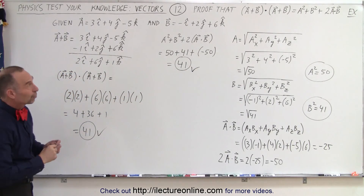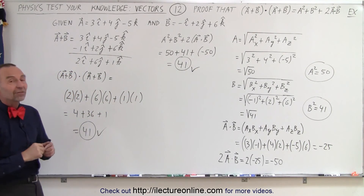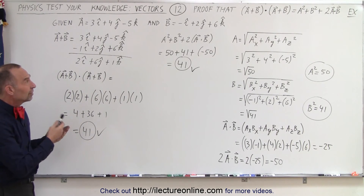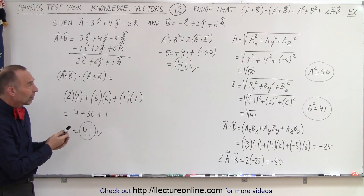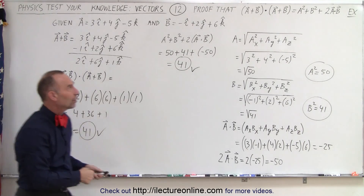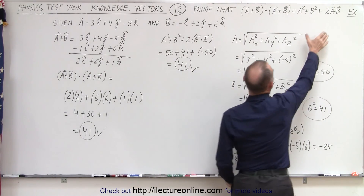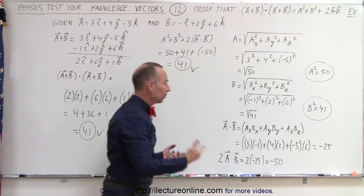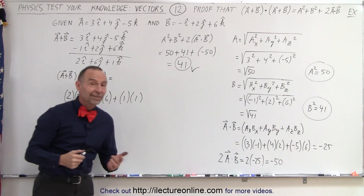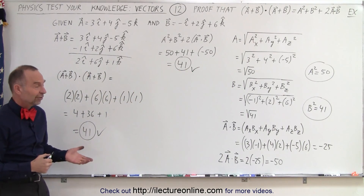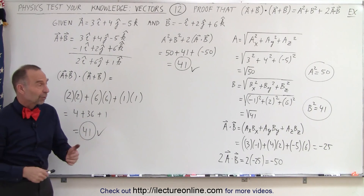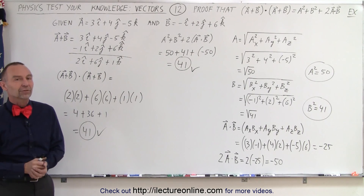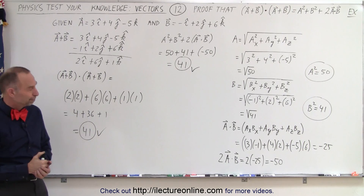So we've shown that the dot product of the sum of two vectors can be found either by using the expanded formula on the right, or by computing the sum first and taking the dot product on the left. In this case, both give 41. In the previous video, we proved that this should hold for every two vectors. And that is how it's done.